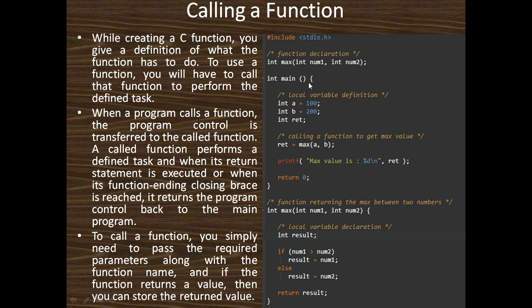Then I define the main function. Here values a and b are integer values: a equals 100 and b equals 200. Then int ret is declared and ret equals max(a, b). Whatever value is returned is stored into the ret variable. Then I print the result: "maximum value is %d", ret. And we terminate the program by return 0.